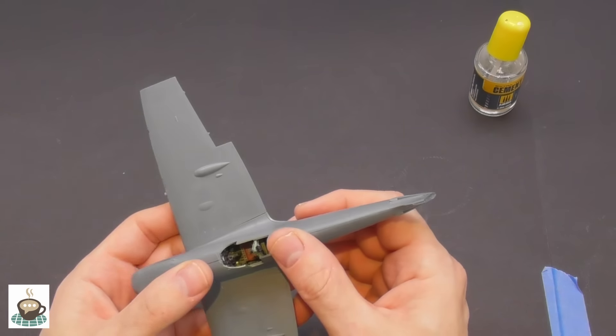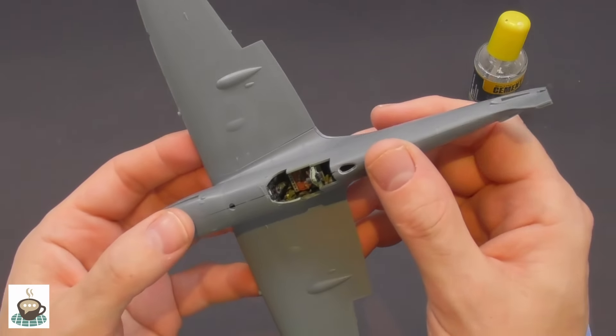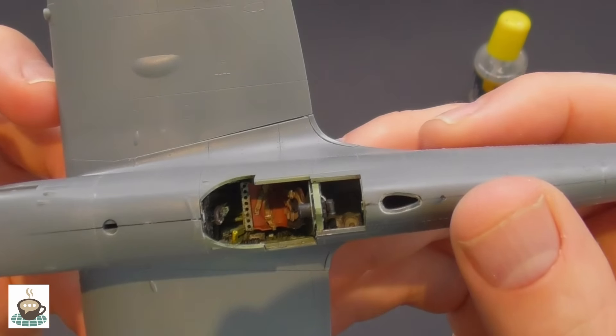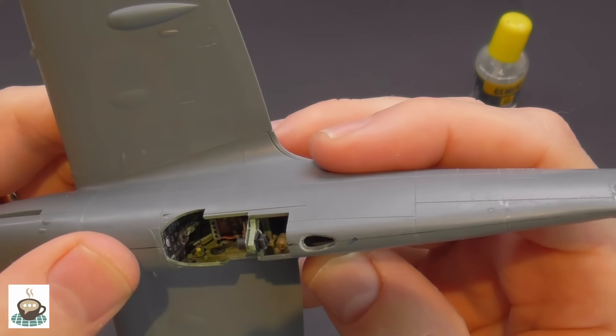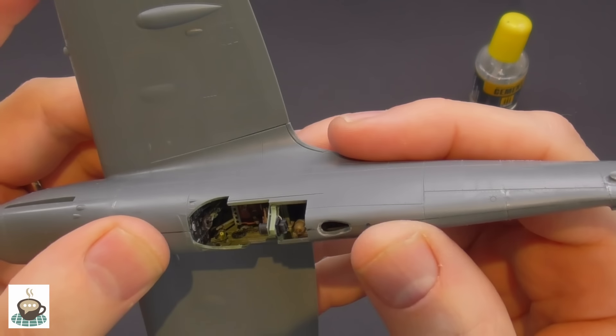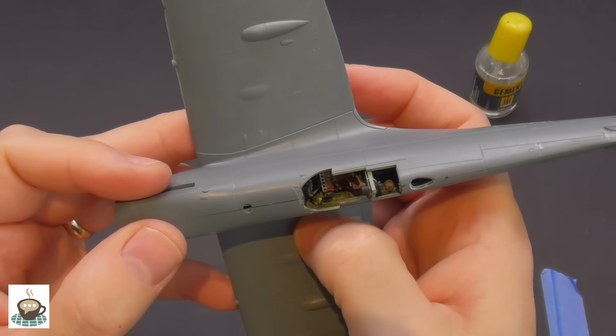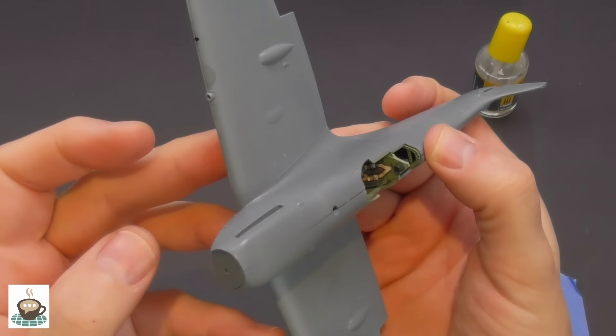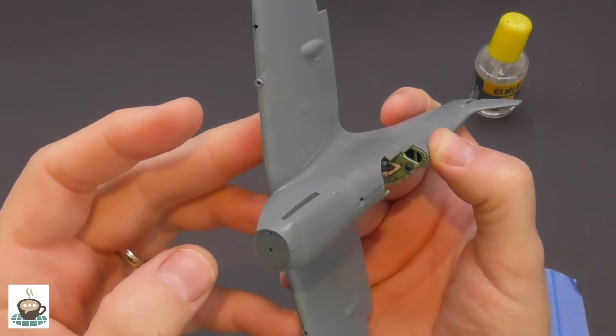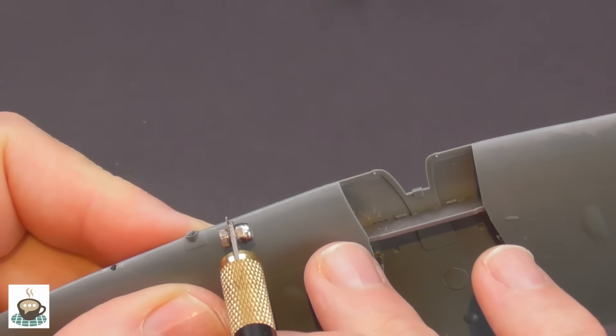So wing to fuselage joint is pretty good. It's a complicated build, you do have to be careful, test fit as you go along, make sure everything lines up. I'm just checking there with my thumb, see if there's any steps. It's pretty good, it's no Armour Hobby Hurricane, but it's still pretty good.